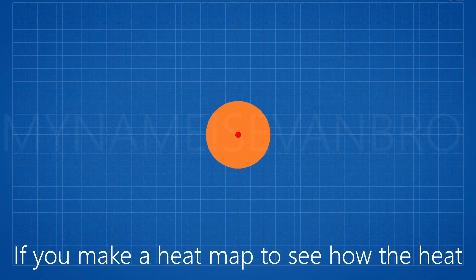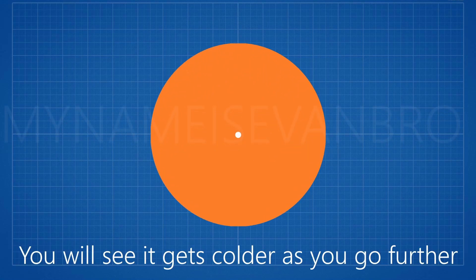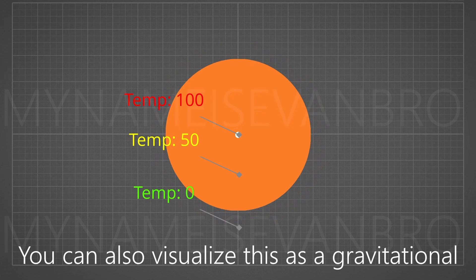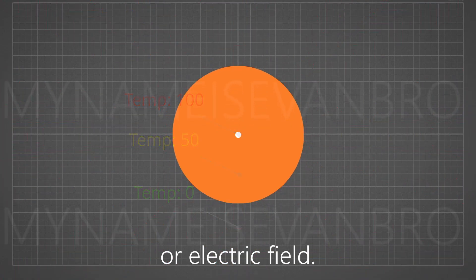If you make a heat map to see how the heat radiates off it, you will see it gets colder as you go further away from the point. You can also visualize this as a gravitational or electric field.